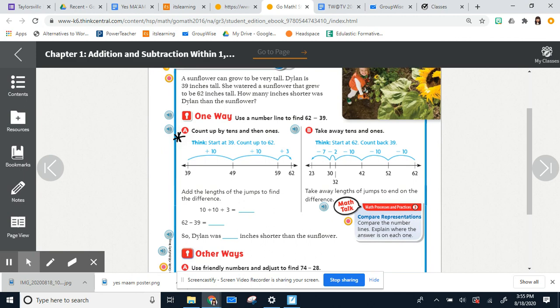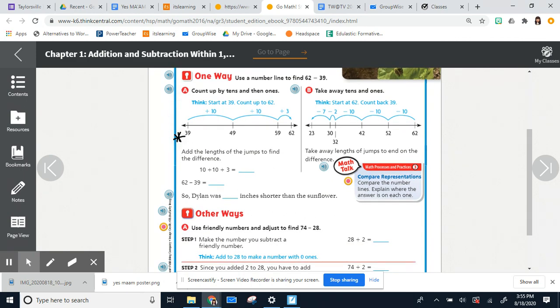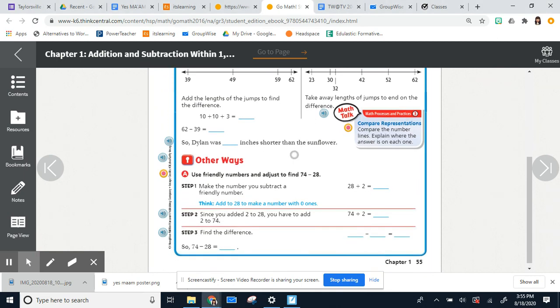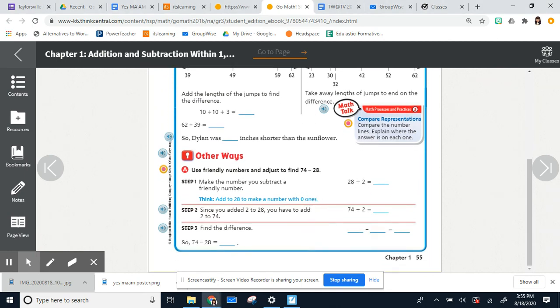So if you don't want to go to all the trouble of making a number line, there is another way that you can do mental math. You can also use friendly numbers. So if we're subtracting 74 minus 28, what we can do is we can make these numbers friendlier. So we can make the number we subtract a friendly number. We're going to look at 28 first. We're adding two to it. So that way we make it a nice round number. We turn it into 30.